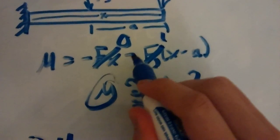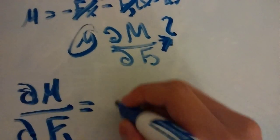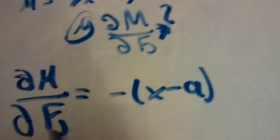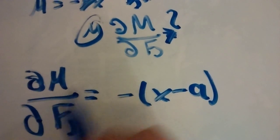That'll stay the same. Don't forget the negative sign. So, zero negative x minus a. This is our partial M over partial Fj.